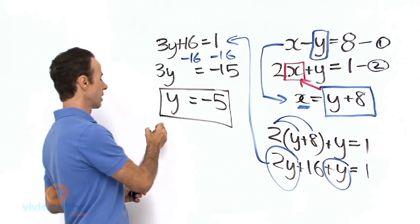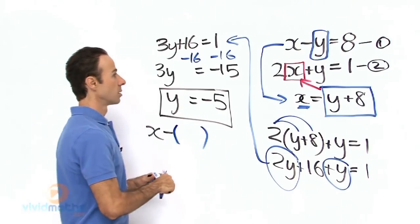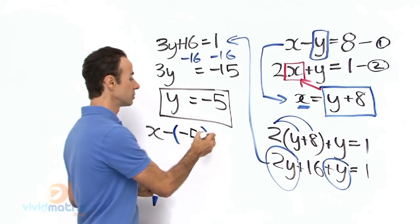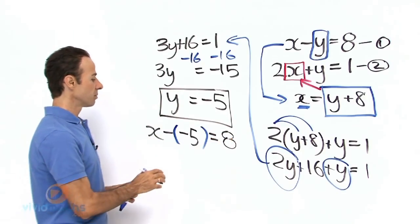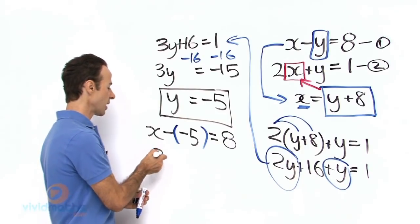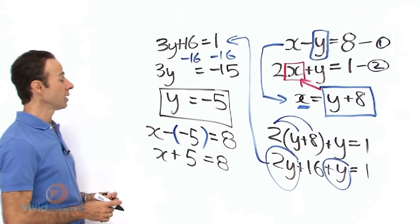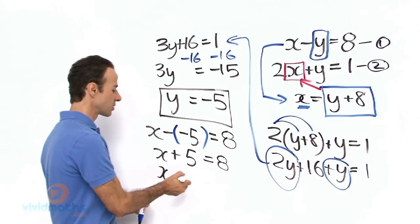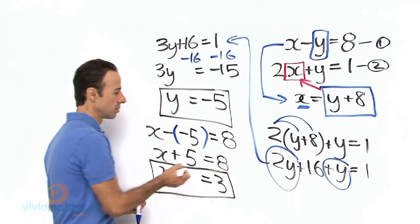The new equation will be x minus, and in brackets the y now is minus 5, and that will equal 8. Now you probably recall a minus next to minus yields a positive, so that means it is x plus 5 equals 8. And all we have to do here is subtract 5 from both sides, so we are left with x equals 8 minus 5 is 3. And that is our second pronumeral.